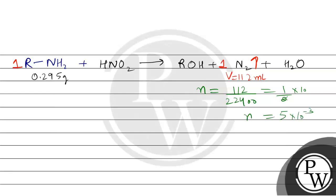Since one mole of amine gives one mole of N₂ gas, the moles of our compound (RNH₂) is also 5 × 10⁻³. Now, number of moles = given weight divided by molecular weight. Given weight is 0.295 grams, and we need to find the molecular weight. So: 5 × 10⁻³ = 0.295 / molecular weight.